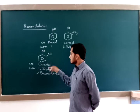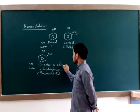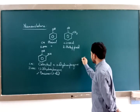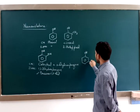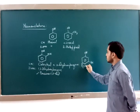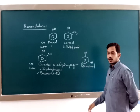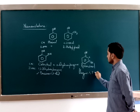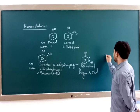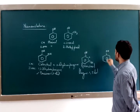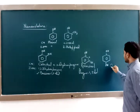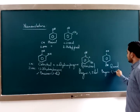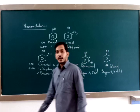Catechol is also called ortho-dihydroxybenzene. If the two hydroxyl groups are attached at opposite positions, then this compound is commonly called quinol, and the IUPAC name is benzene-1,4-diol. In this way, dihydric phenols can be named.